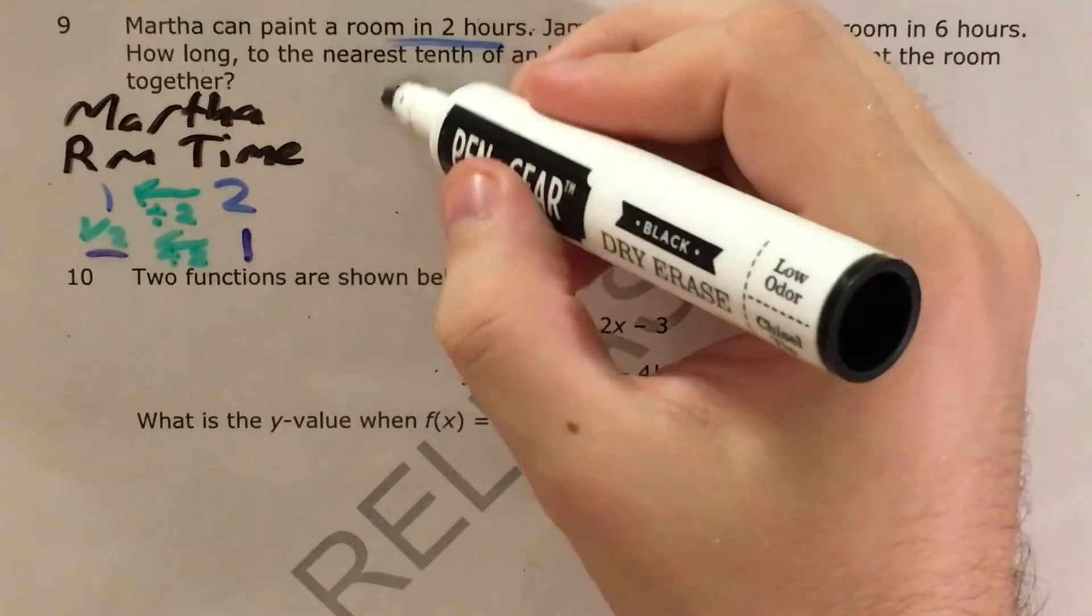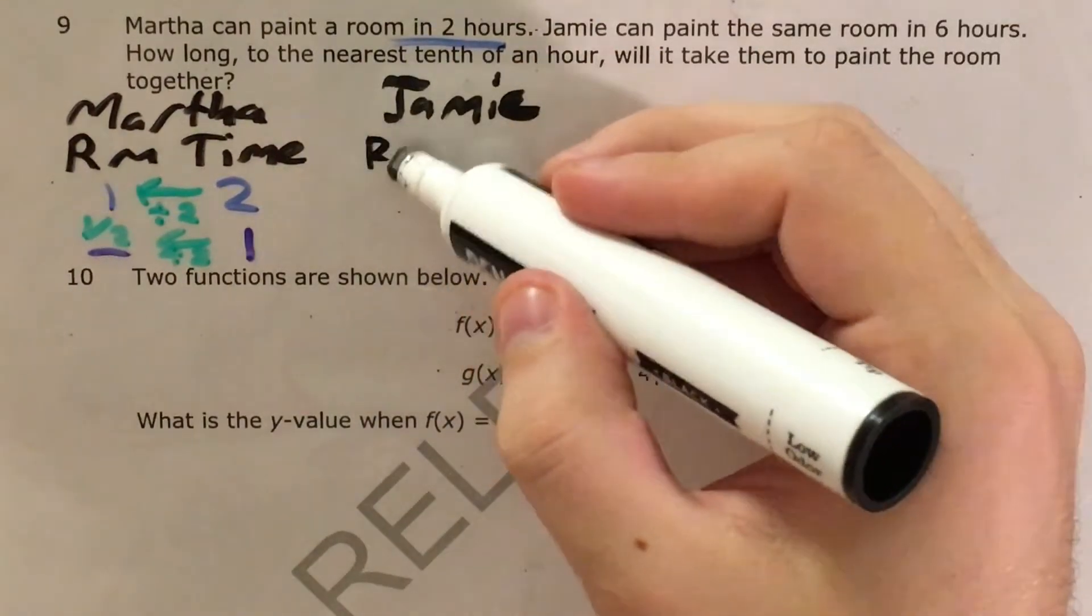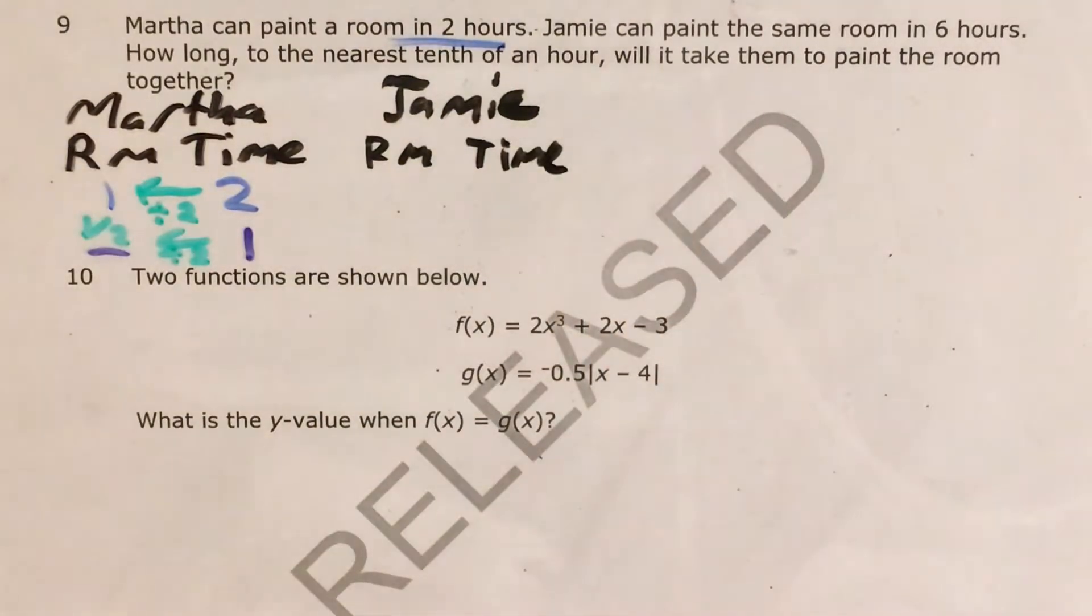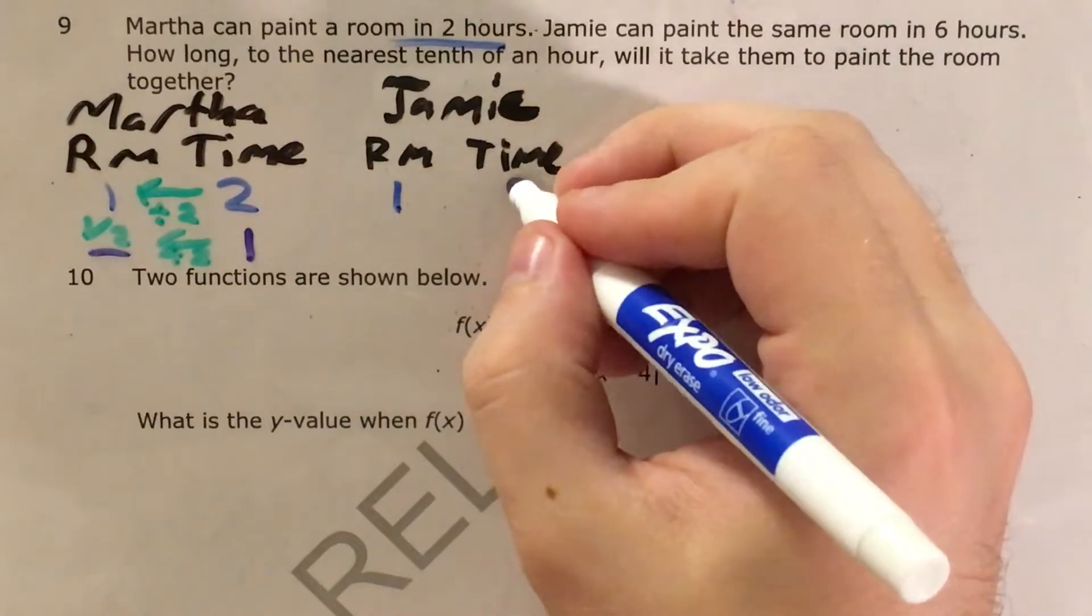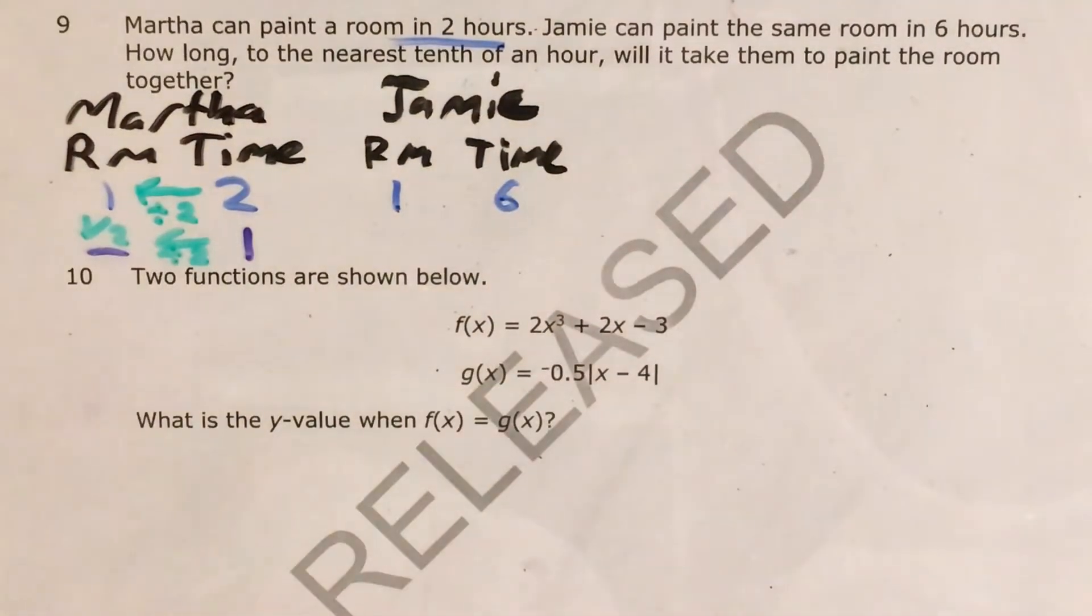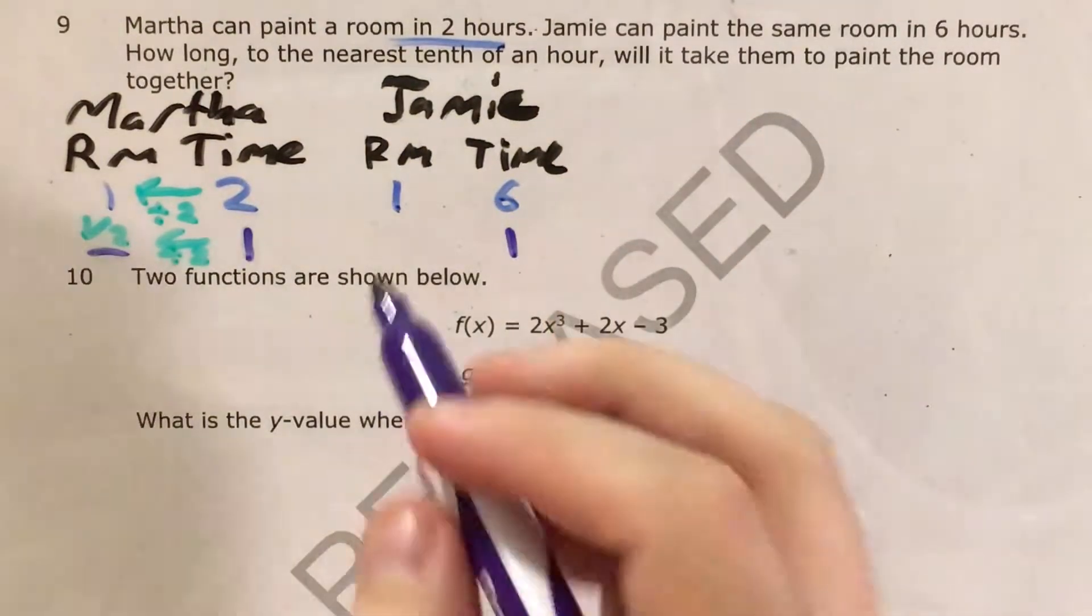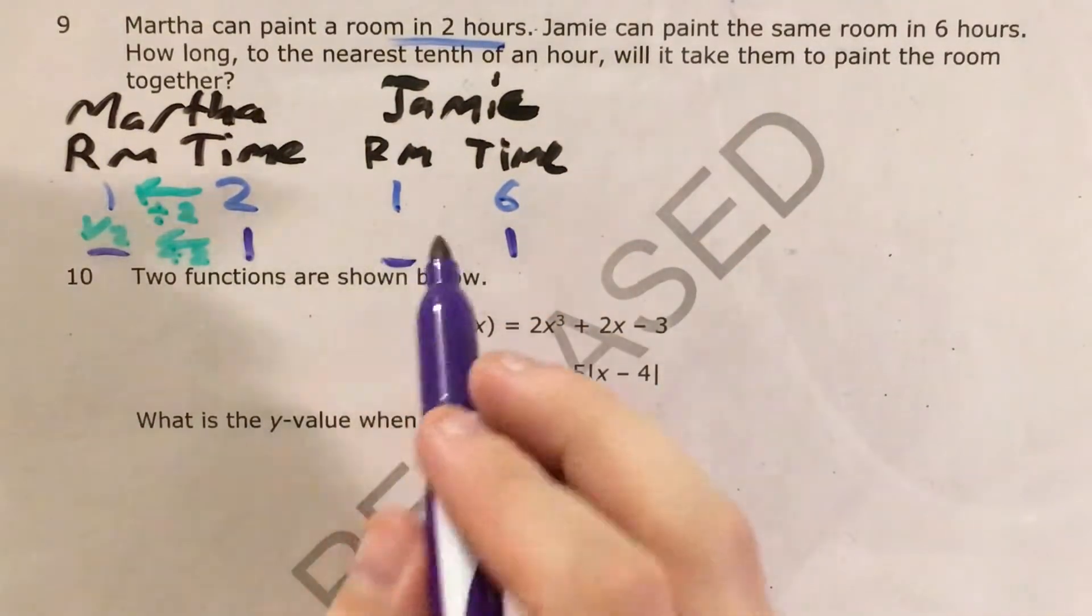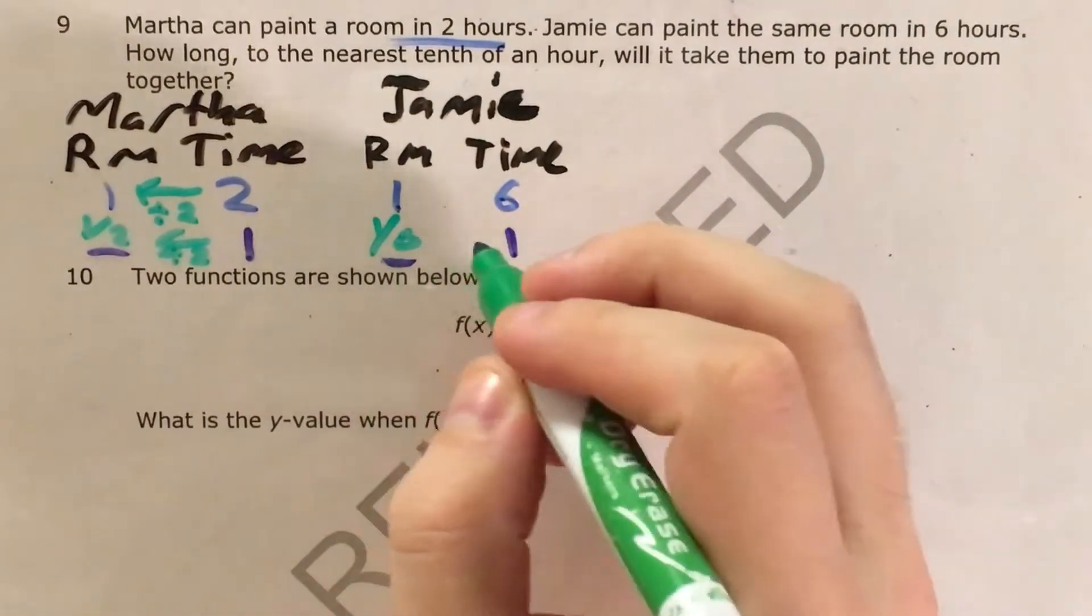Next we move on to Jamie. And Jamie paints the same room, so it's one room in six hours. But how much can she paint in one hour? Well you might have already guessed it. Using a similar mathematical process we get one sixth.